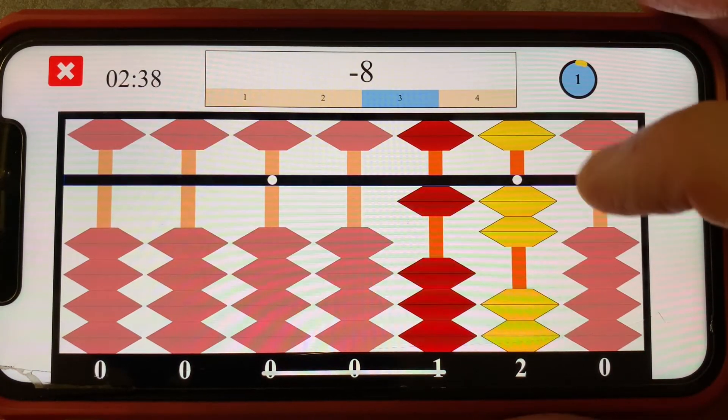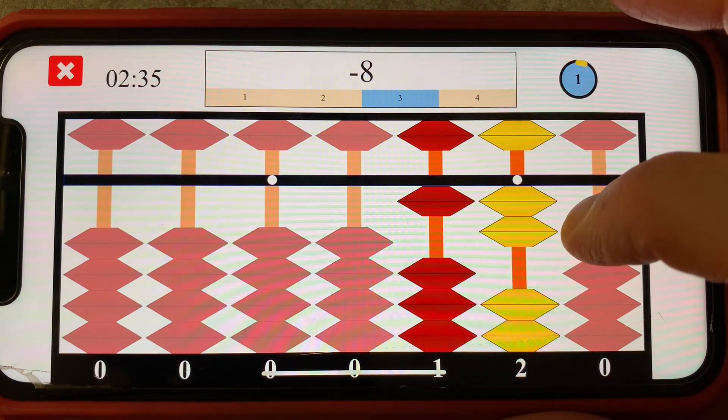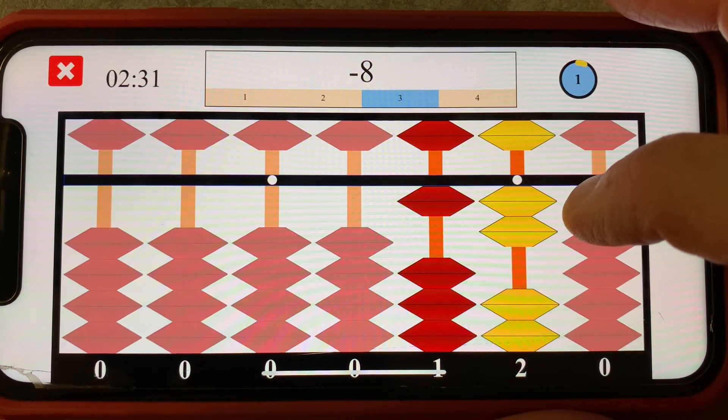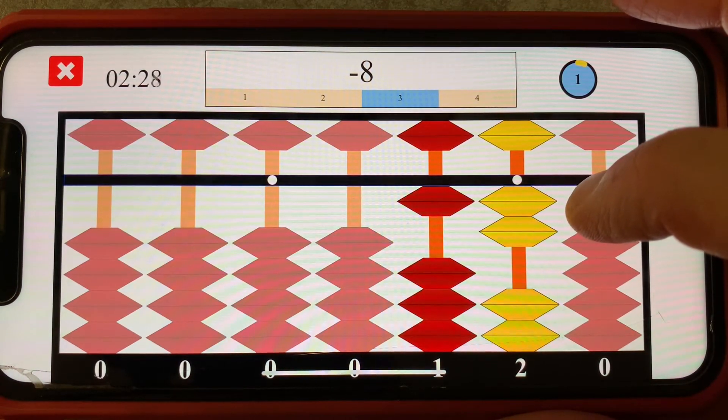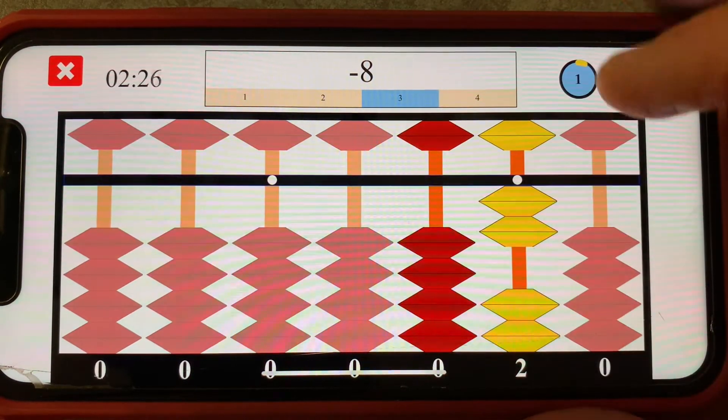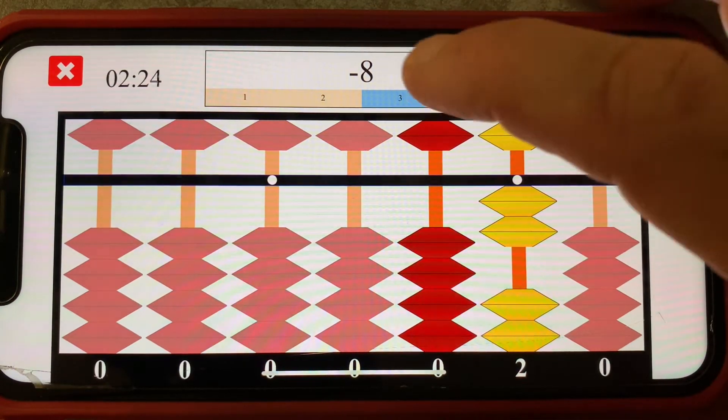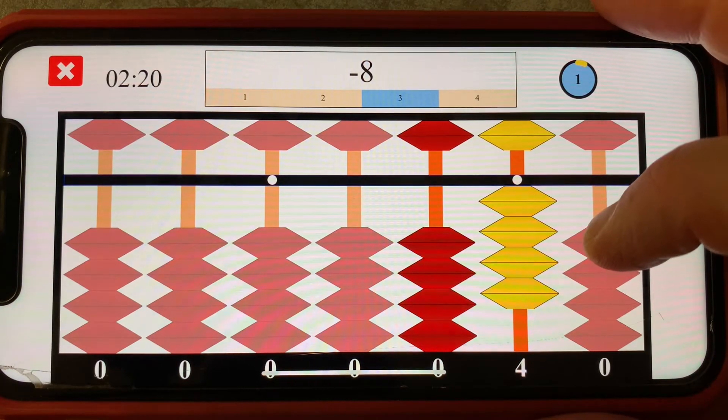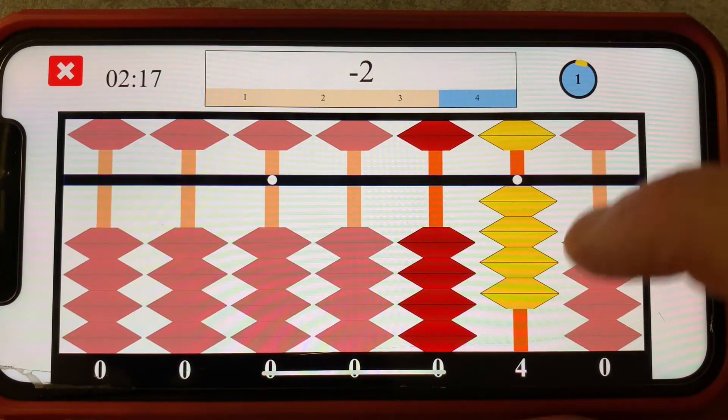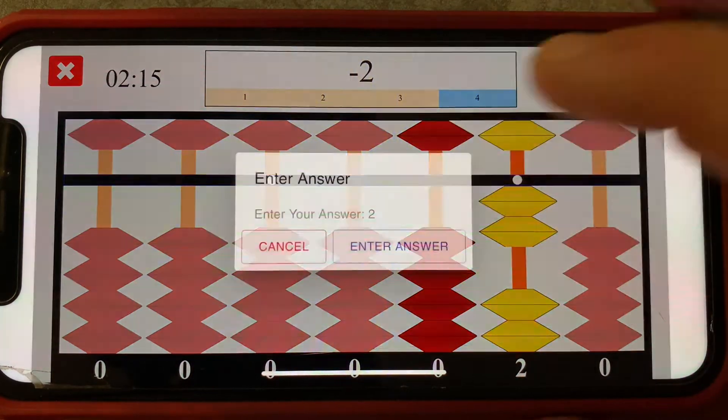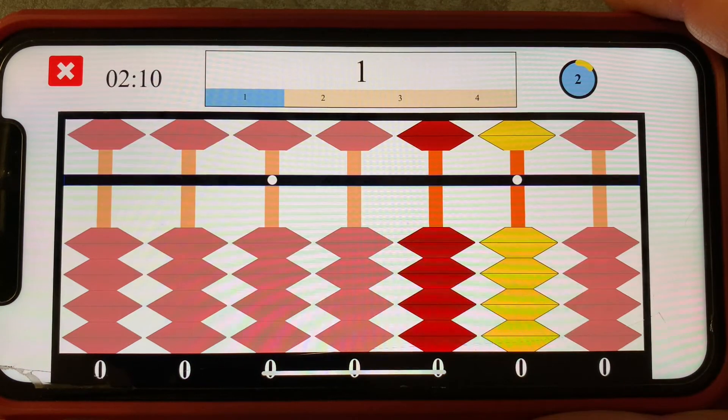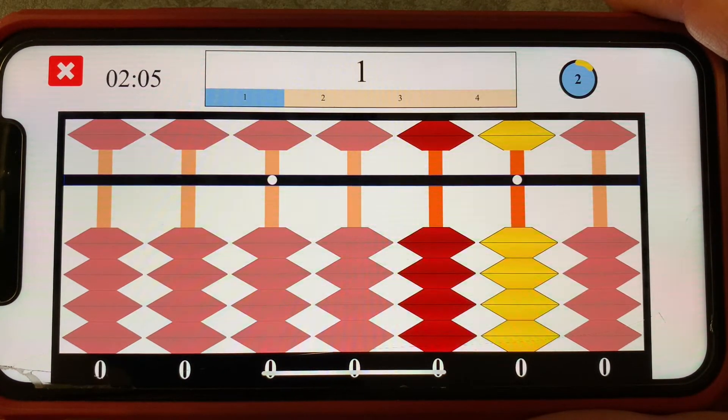Now I want to subtract eight. Well I only have two beads touching the reckoning bar which is not enough to subtract eight. So I need to use my ten pair subtraction rule. Subtract one from the next rod left and add eight's ten pair, two, on my target rod. Finally I'll subtract two for a final answer of two.